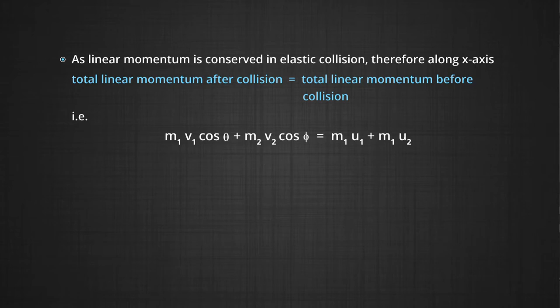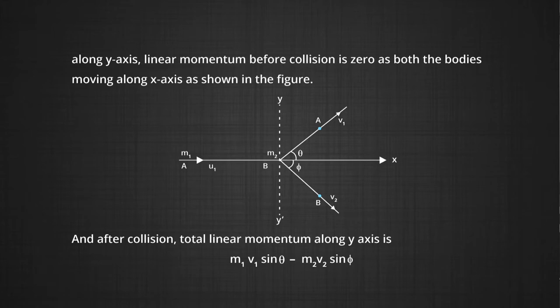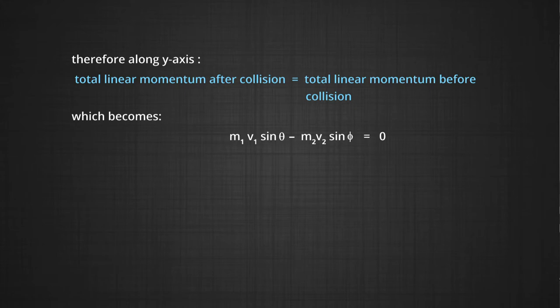Along the x-axis: M1·V1·cos θ + M2·V2·cos φ = M1·U1 + M2·U2. Along the y-axis, linear momentum before collision is zero, as both bodies are moving along the x-axis as shown in Figure 1. After collision, total linear momentum along the y-axis is M1·V1·sin θ − M2·V2·sin φ. Therefore, along the y-axis: M1·V1·sin θ − M2·V2·sin φ = 0.